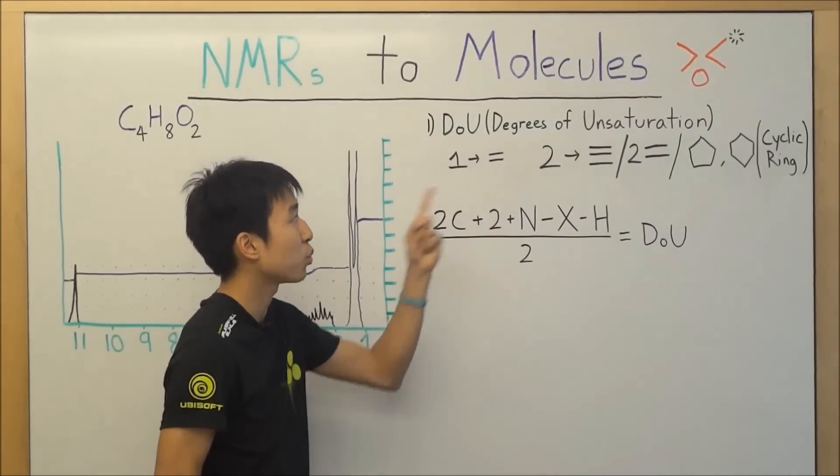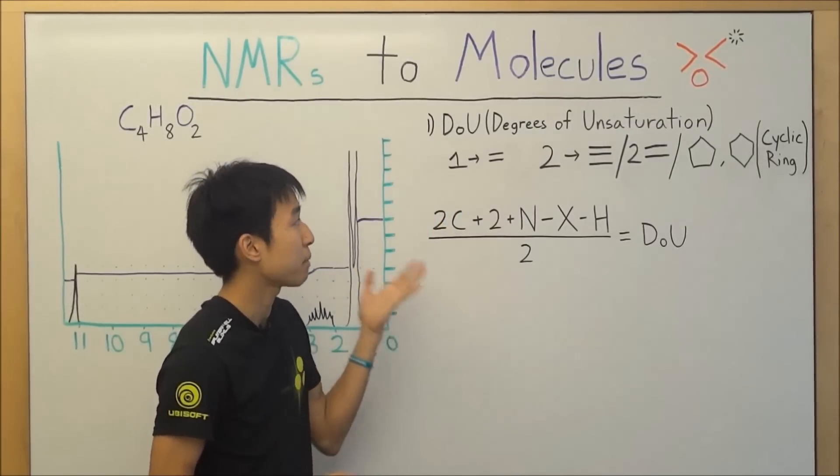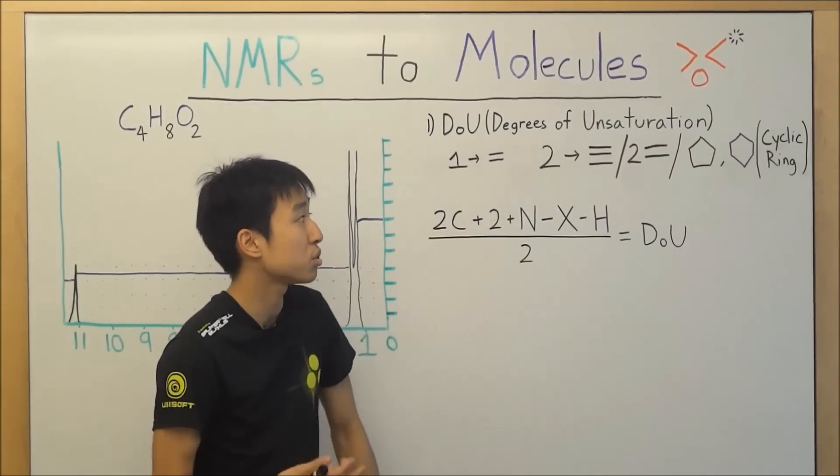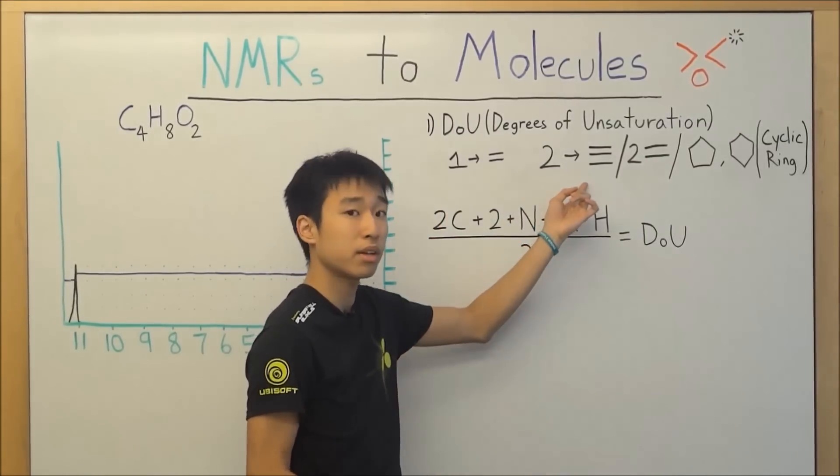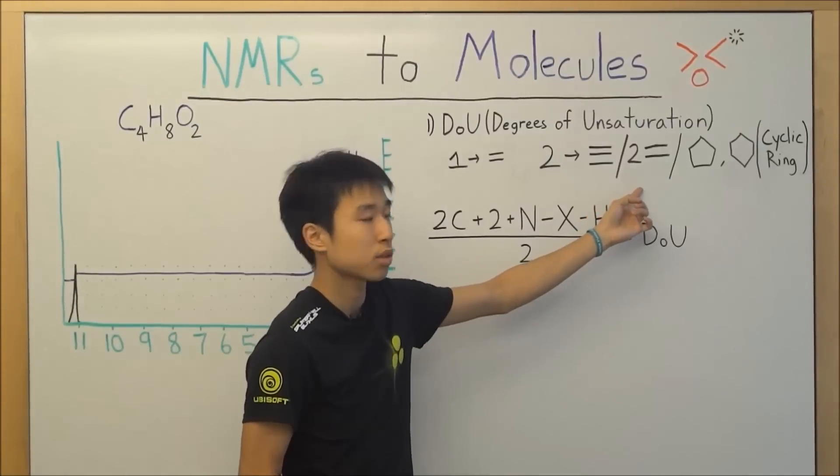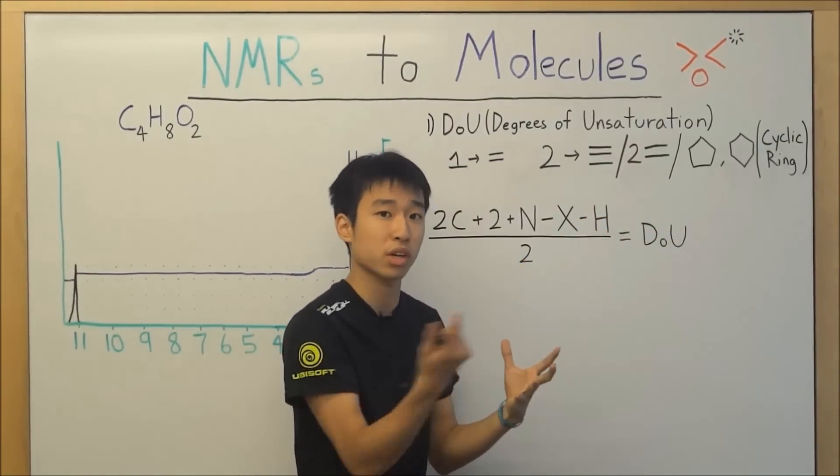Well if you figure out that your molecule has one degree of unsaturation, that means that for sure there's a double bond in there. If it has two then it could either be a triple bond, two double bonds, or your molecule might have a cyclic ring structure.